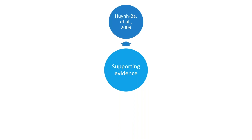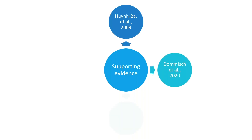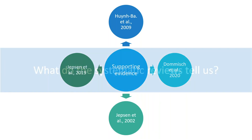The four supporting papers are: Honba et al. in 2009, Domish et al. in 2020, Yepsen et al. in 2002, and Yepsen et al. in 2019. So, what do these systematic reviews tell us?